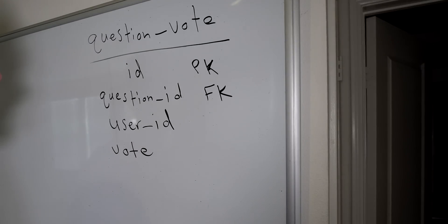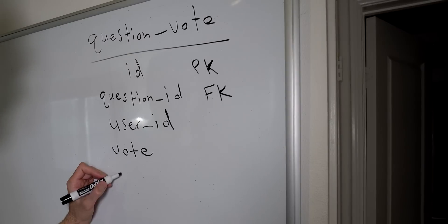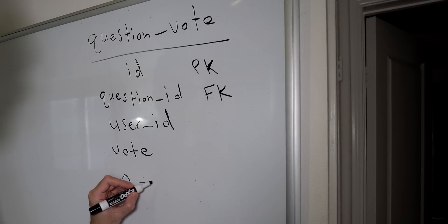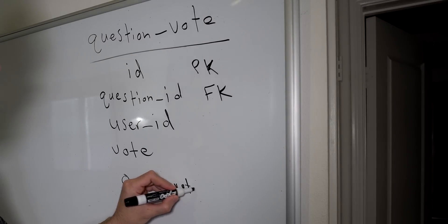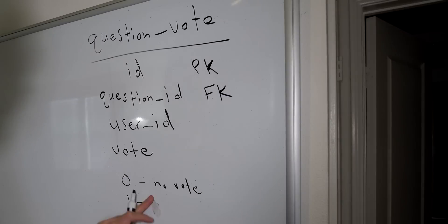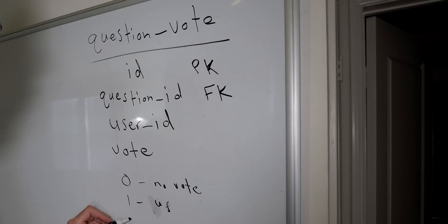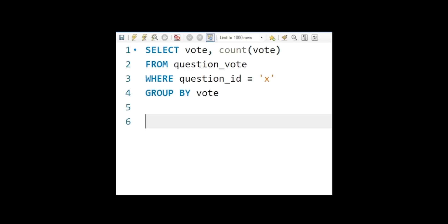We need to keep track of their vote, so I'm just going to have one field be the vote. Zero will be no vote — so this is if they unvote anything. One will be a thumbs up, and two will be a thumbs down.